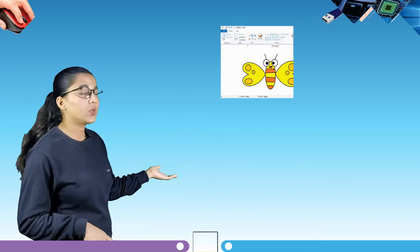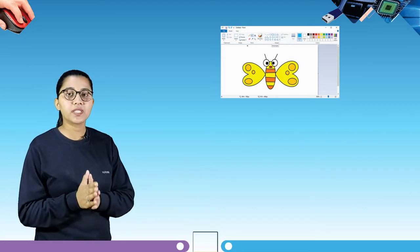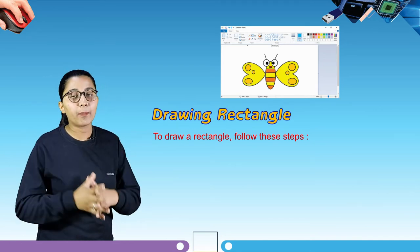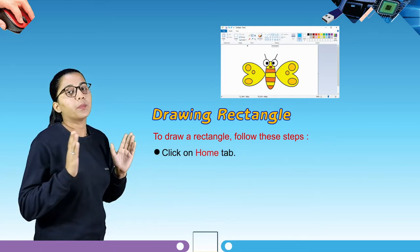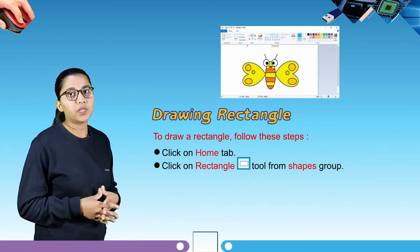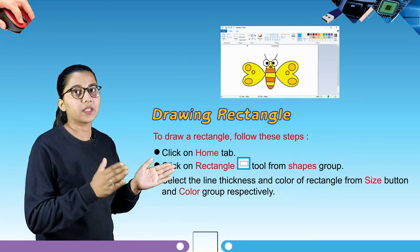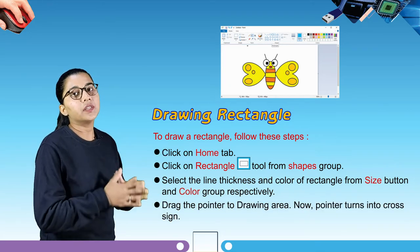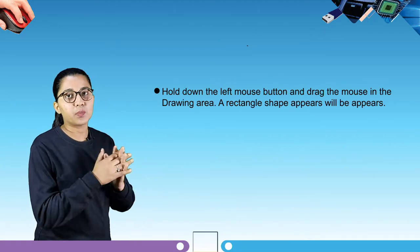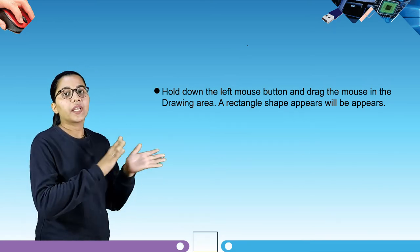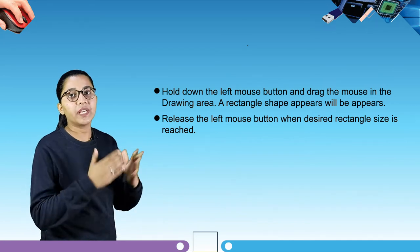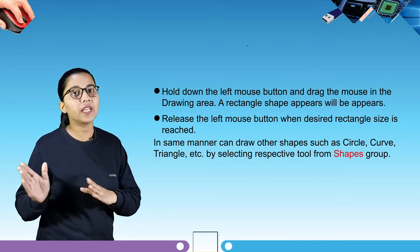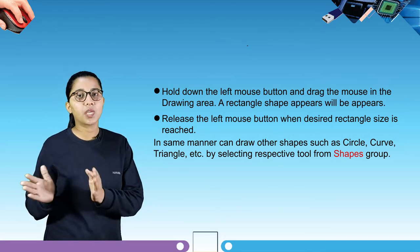In this picture you can see the interface of the MS Paint program. Our next topic is drawing a rectangle. To draw a rectangle, click on the home tab, click on the rectangle tool from the shape group, select the line thickness and color from the size button and color group. Drag the pointer to the drawing area — the pointer turns into a cross sign. Hold down the left mouse button and drag the mouse; a rectangle shape will appear. Release the left mouse button when the desired size is reached. In the same manner, you can draw other shapes such as circle, curve, triangle, etc., by selecting the respective tool from the shape group.